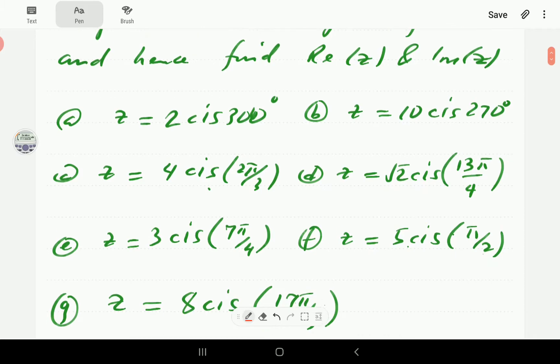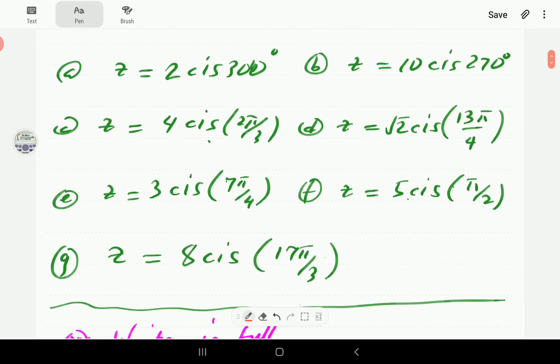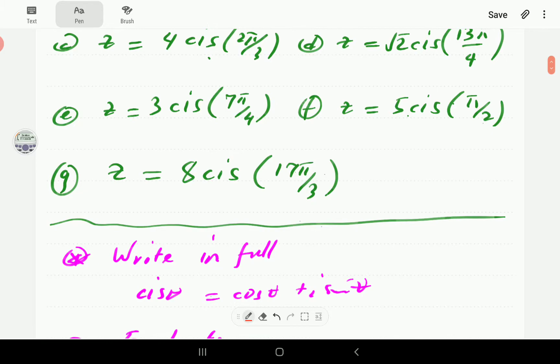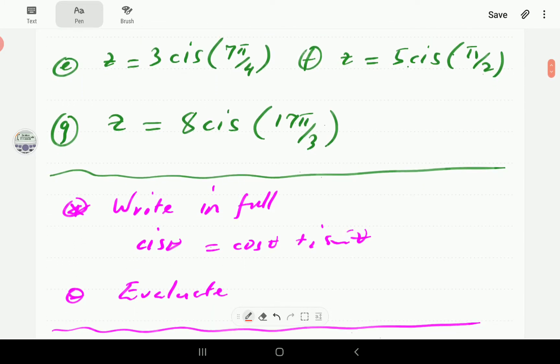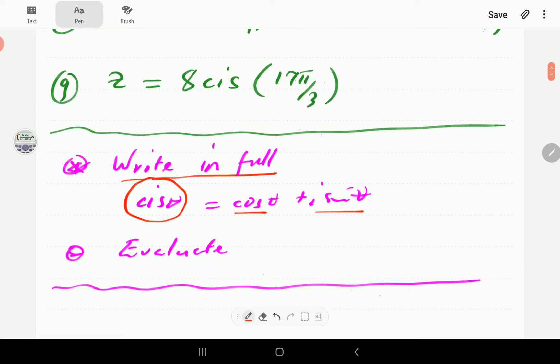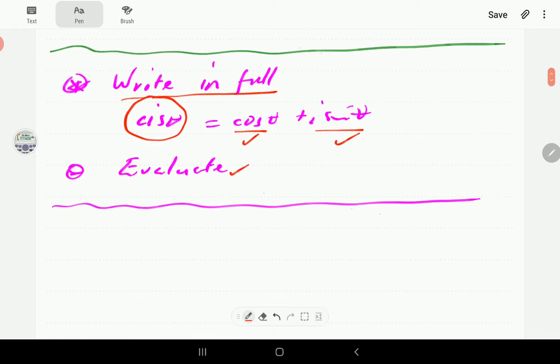These are the complex numbers we're going to convert to rectangular form. What is involved this time is, first, we're going to write the complex number in full. That is, if the abbreviation cis is used, we're going to write it out as cosine theta plus i sine theta. And then after that, all that is involved is just evaluating cosine and sine and then removing any brackets that may be there.